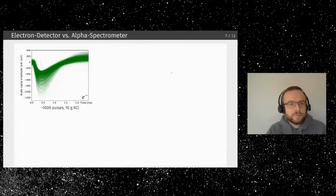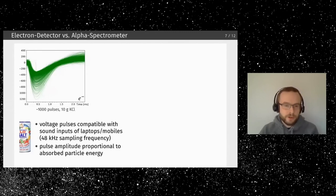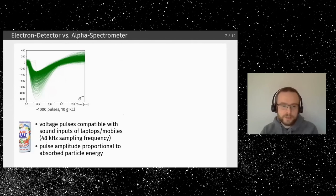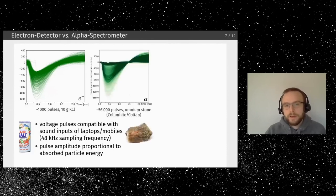Here is an example of 1,000 pulses overlaid as measured on an oscilloscope in persistence mode. The size of the pulse is proportional to the energy absorbed. The circuit is designed so that the pulse width is large enough for a regular sound card sampling frequency to catch and measure it. This is potassium salt — also called Lo-Salt in the UK — which can be bought at a pharmacy or organic food store. On the right is a columbine stone with traces of uranium, measured with the alpha spectrometer.